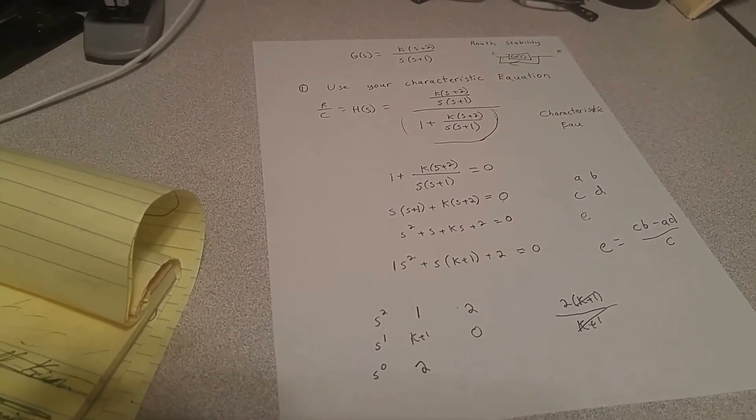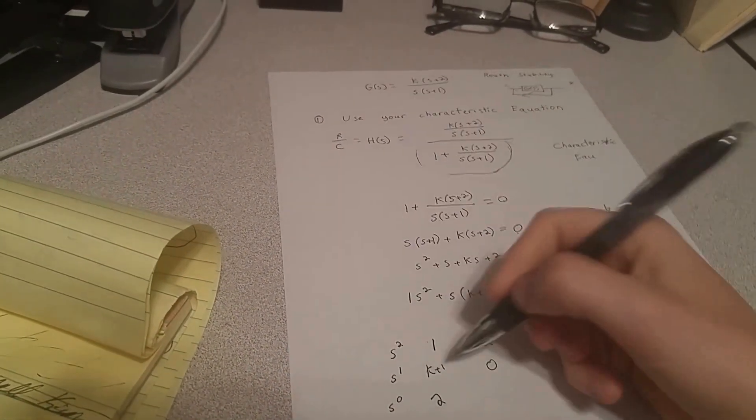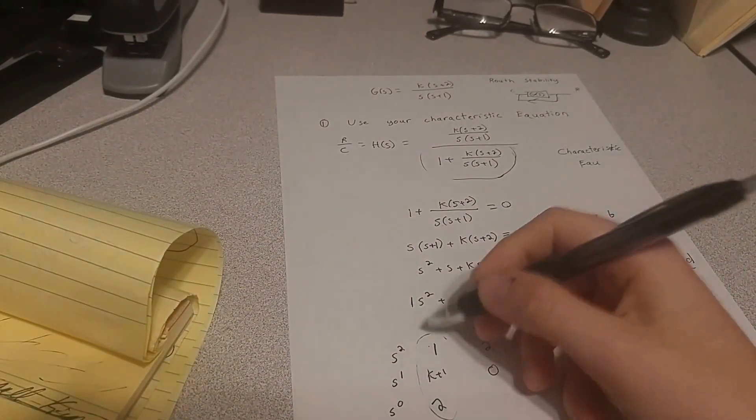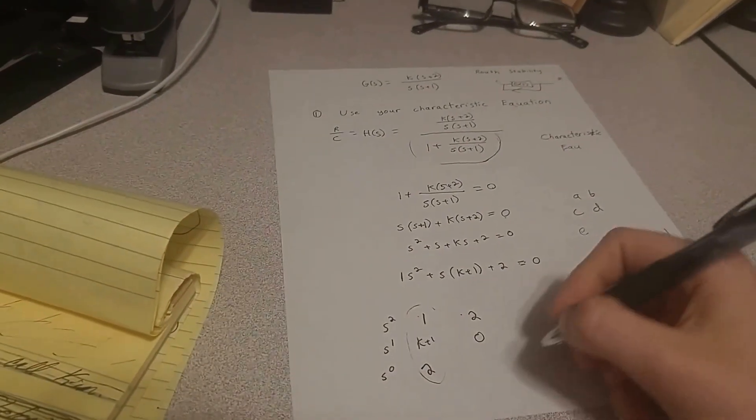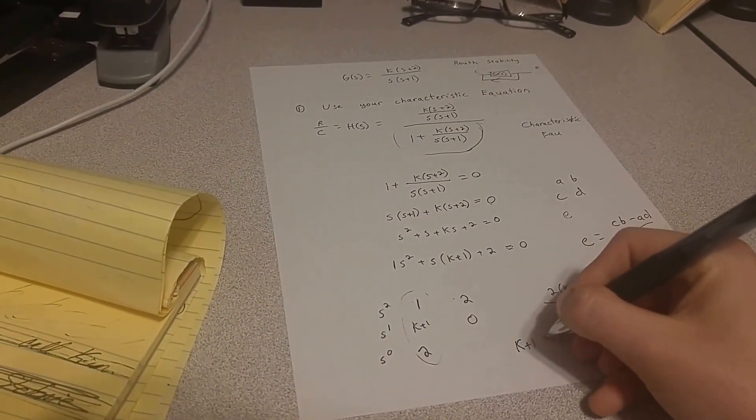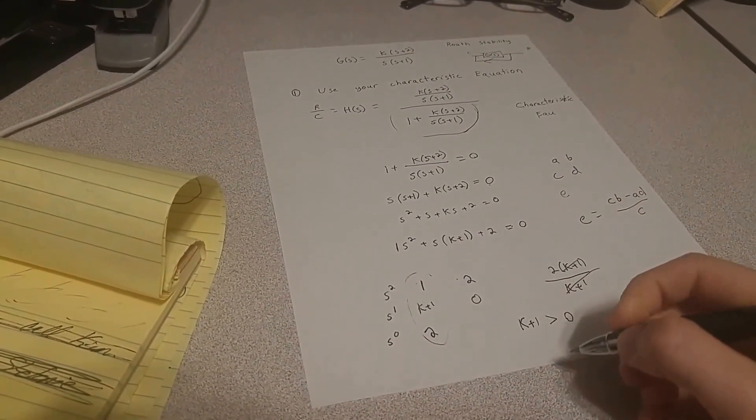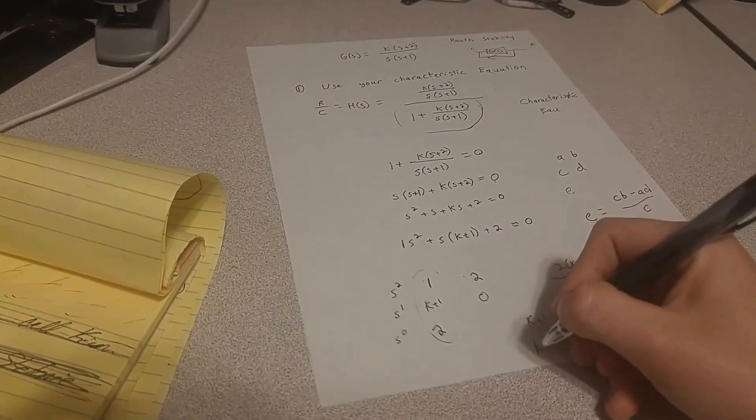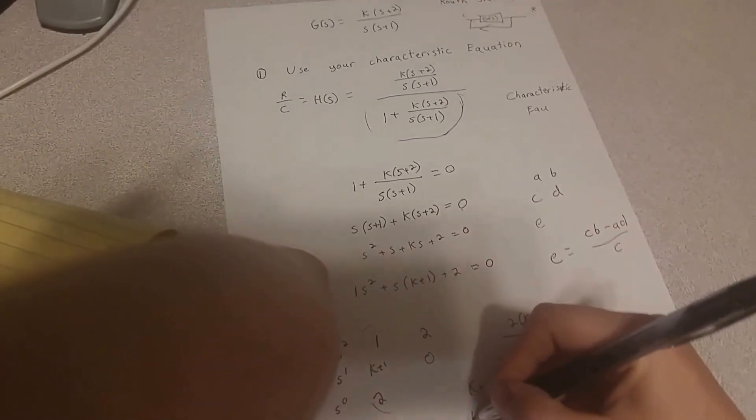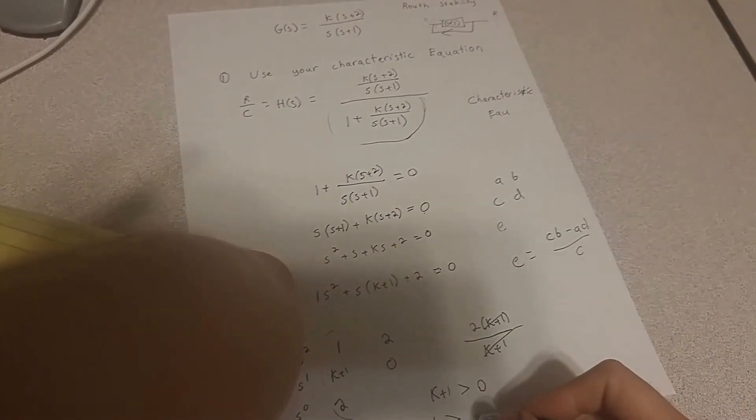So now, in order for the system to be stable, all of these values have to be greater than 0. So that means k plus 1 is greater than 0, and that means k has to be greater than negative 1.